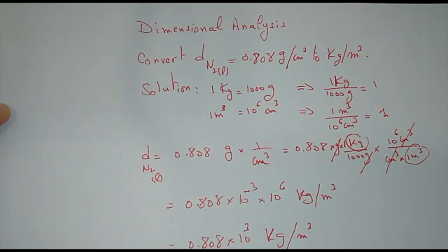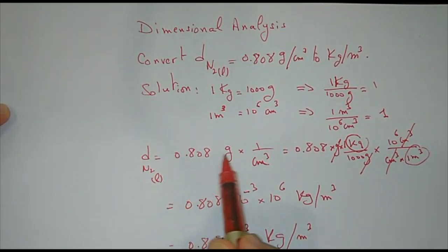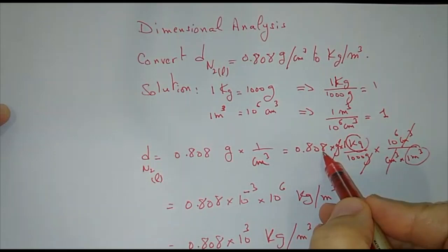Let's write down the density again. It's 0.808 grams times 1 over centimeter cubed. So it's 0.808 grams - I put the gram.